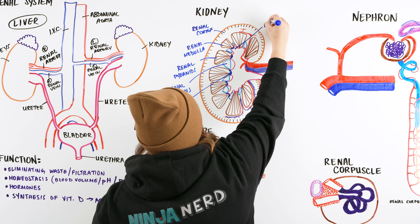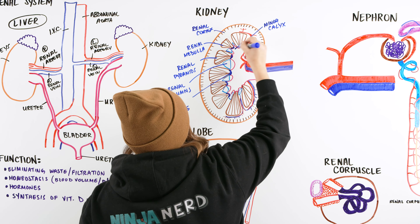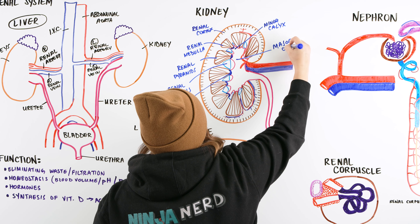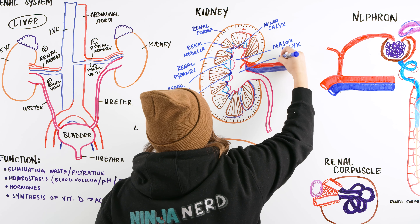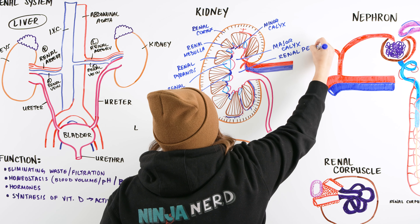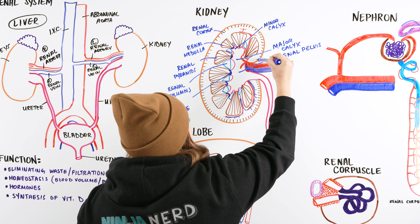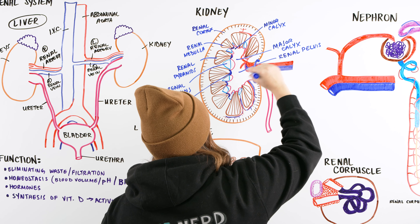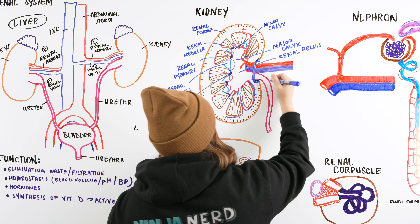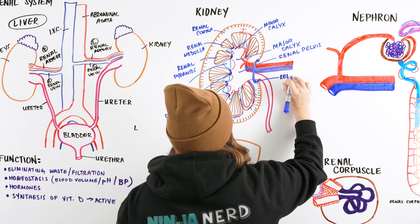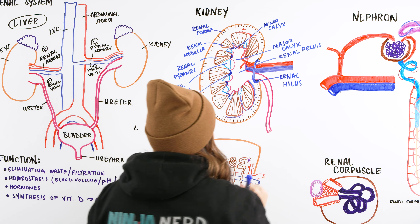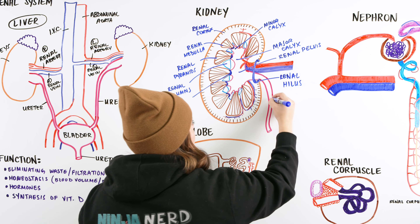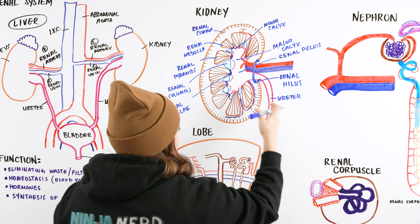Those finger-like projections are our minor calyx. The minor calyces are where urine starts to collect; they drain into the larger major calyx, which then drains into the renal pelvis. As urine exits the kidney, it passes through the renal hilum — or hilus — the opening that allows blood flow, urine, and nerves to enter and exit the kidney. The renal pelvis becomes our ureter as it exits through the hilum.